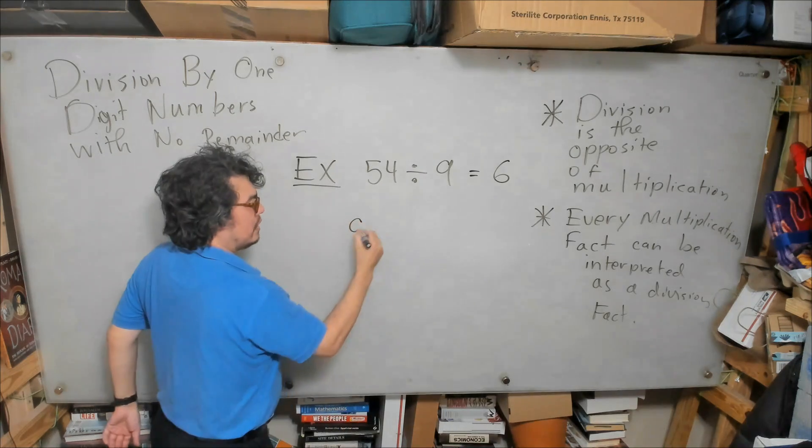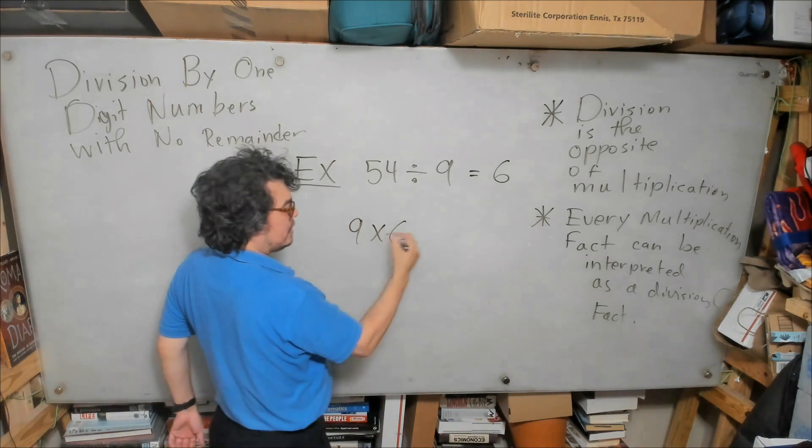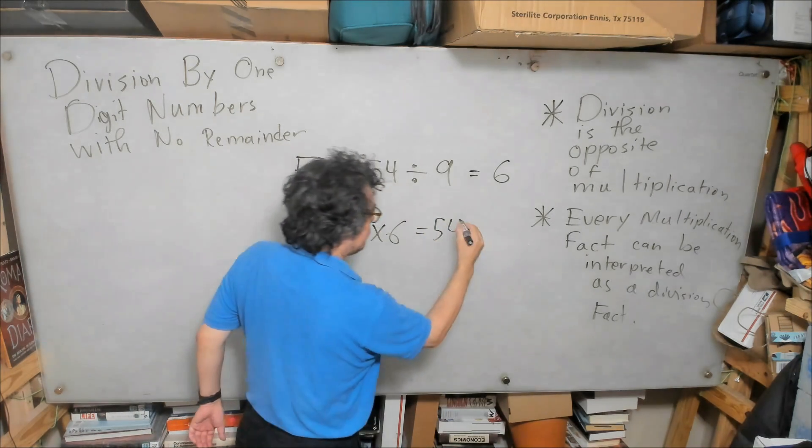The answer is 6. Why? Because 9 times 6 equals 54.